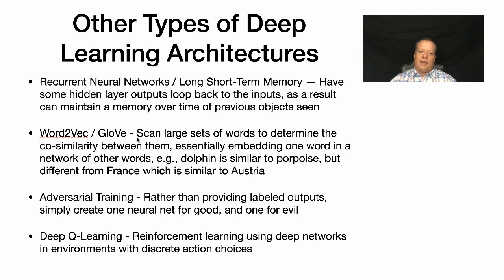Another approach that's used a lot in deep learning is Word2Vec and GloVe. These are essentially embeddings. They're taking a large set of words and then determining the co-similarity between them and all the other words. You can use this to determine how similar two words are. You might determine that dolphin is similar to porpoise, but different from France, which is similar to Austria.